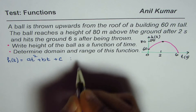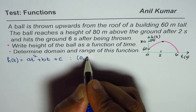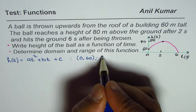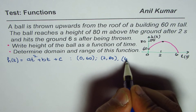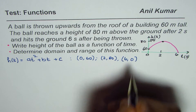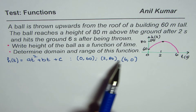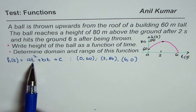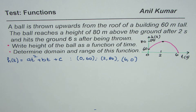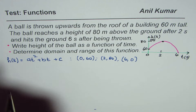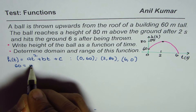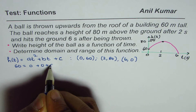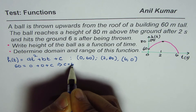The three points given to us are: at t = 0, height is 60 meters; at t = 2, height is 80 meters; and at t = 6, height is 0. If we substitute the first point — t = 0, h = 60 — we get 60 = 0 + 0 + c, which gives us c = 60. That's our first result — call this equation 1.